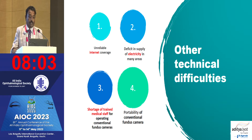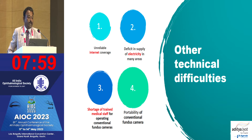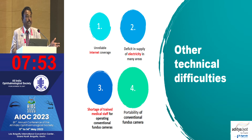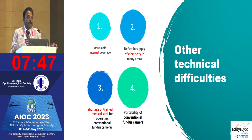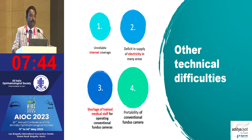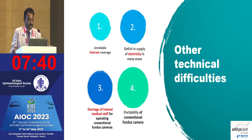Technical difficulties in India in using AI include unreliable internet coverage, as Dr. Arun Shethrapal mentioned — you need correct data with correct matching details, otherwise the AI will not be accurate. There is also a deficit in electricity supply in many areas, a shortage of trained medical staff for operating conventional fundus cameras, and the issue of portability of fundus cameras.